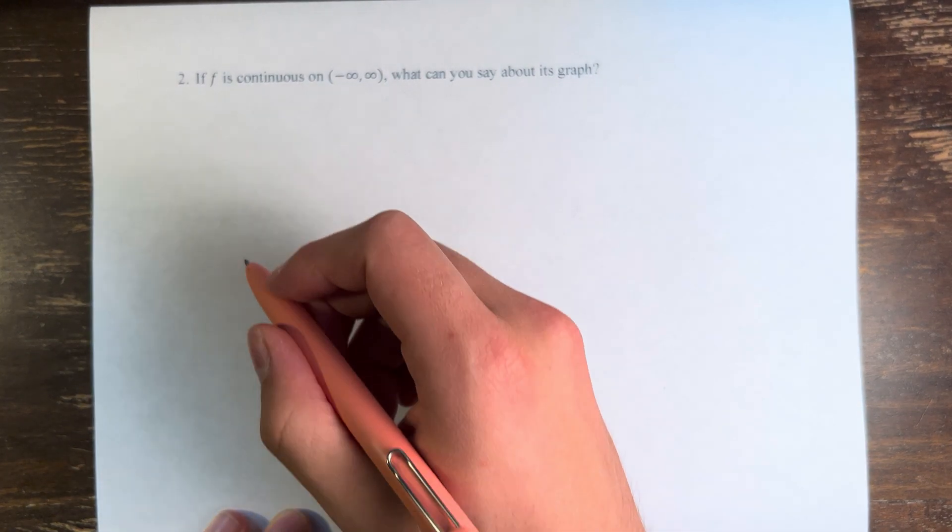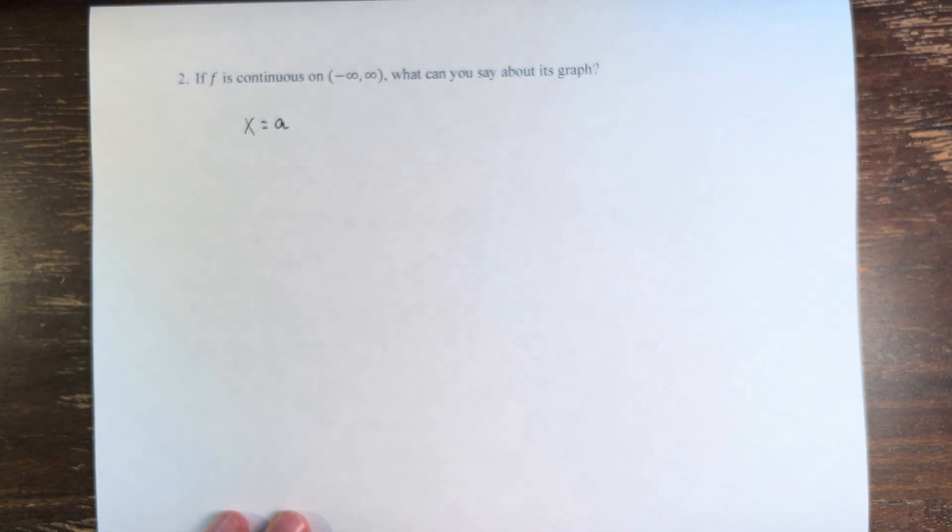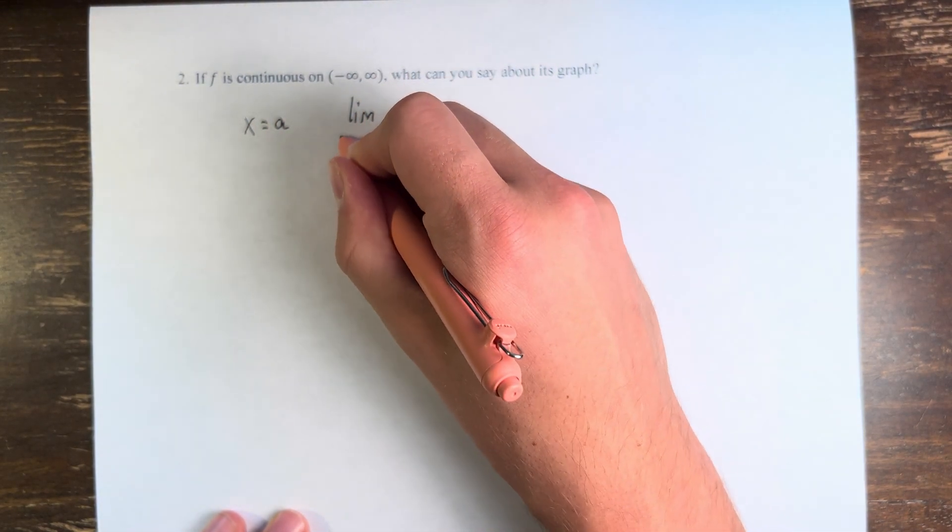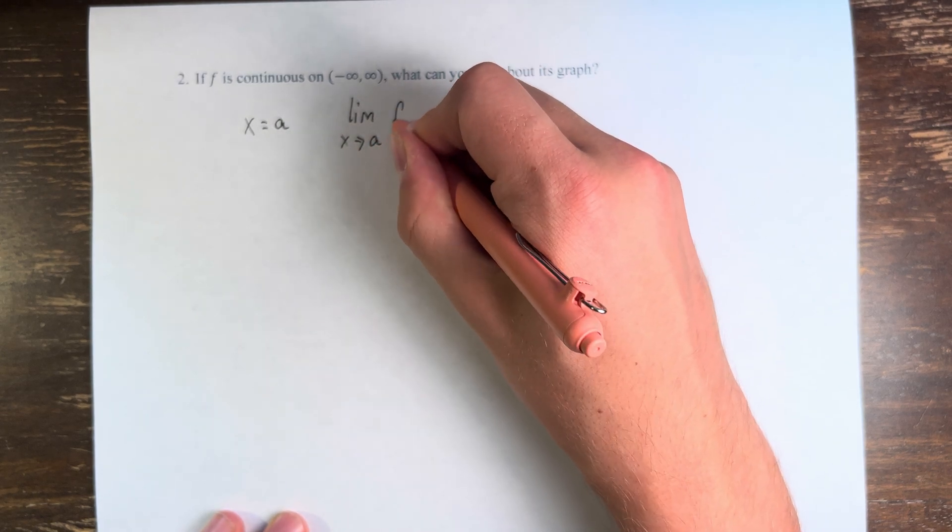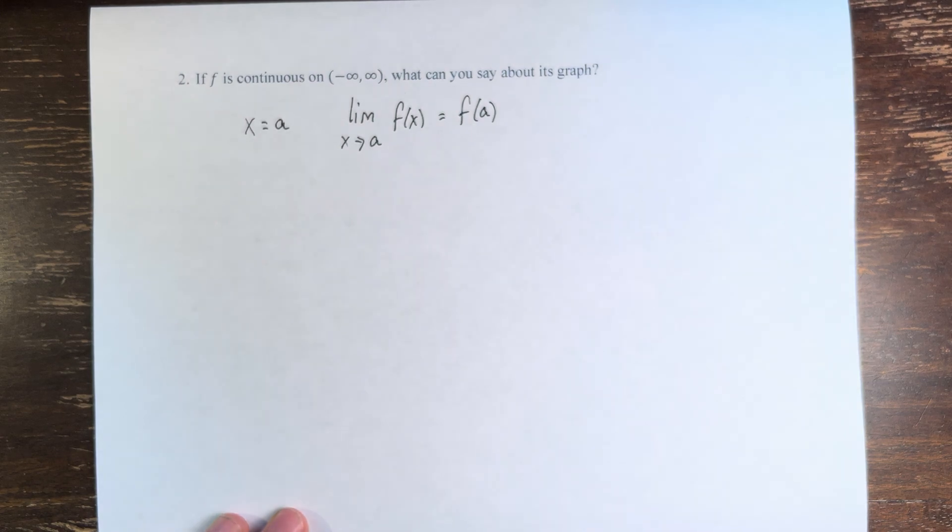So if a function is continuous at x equals a, then that means that the limit as x approaches a of the function is equal to the value of the function at a.